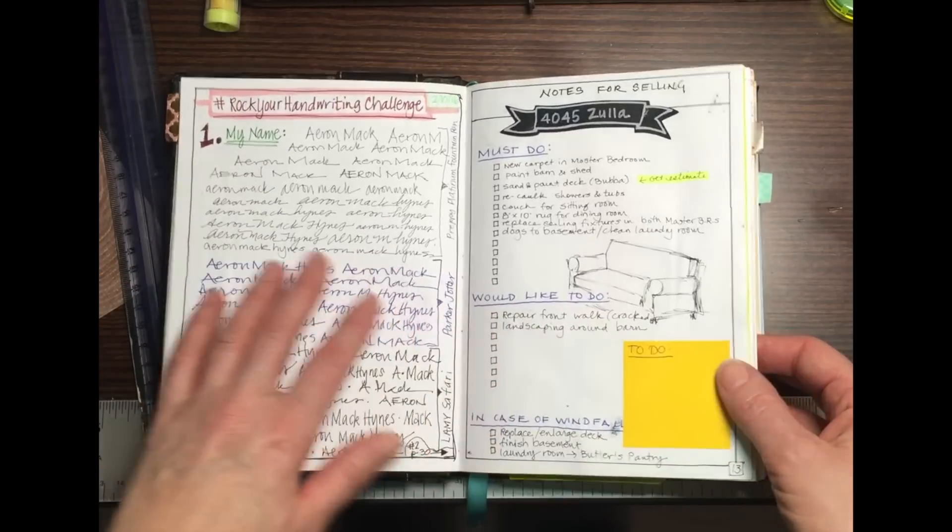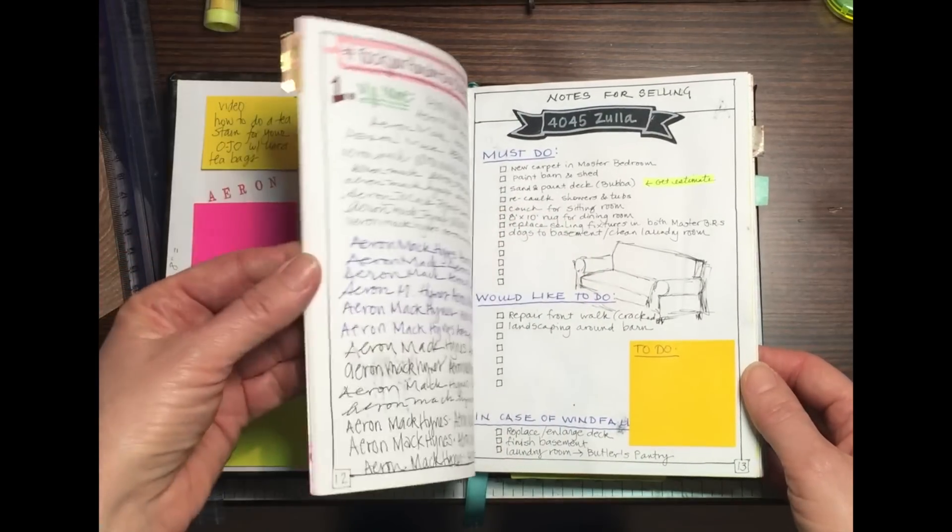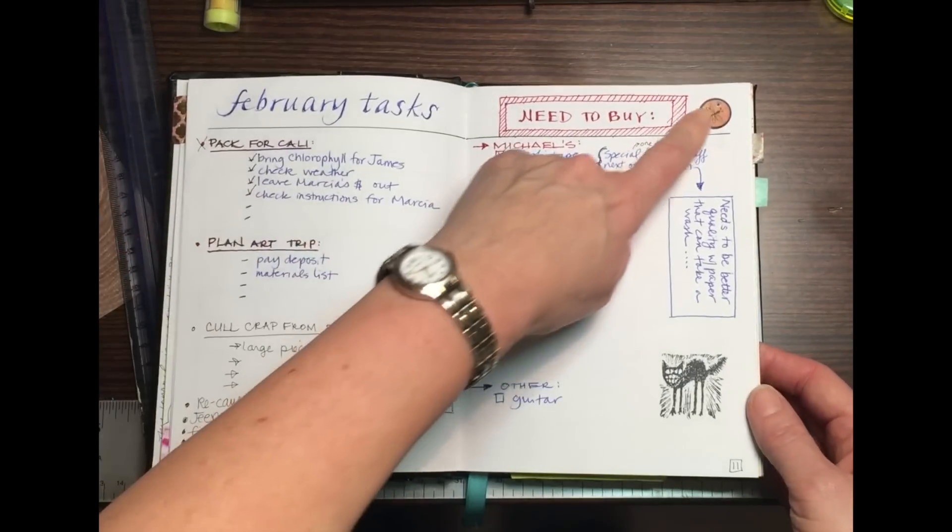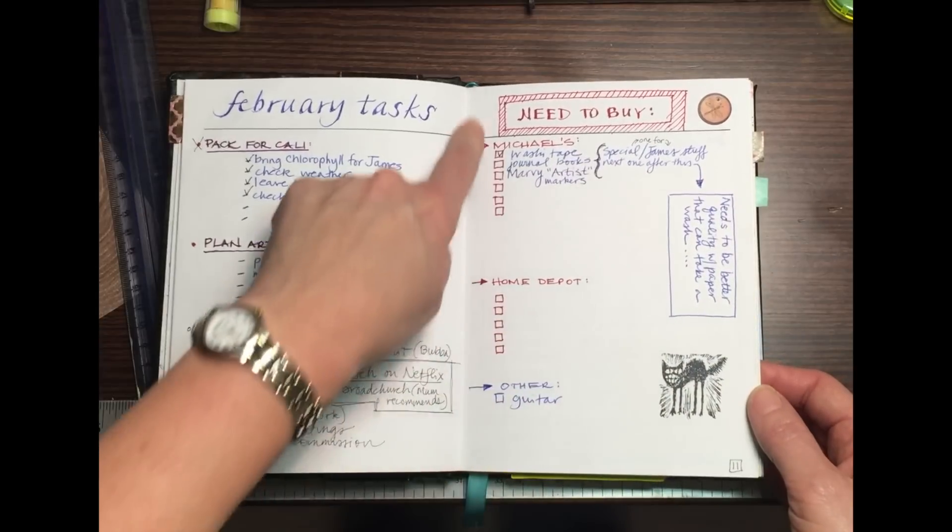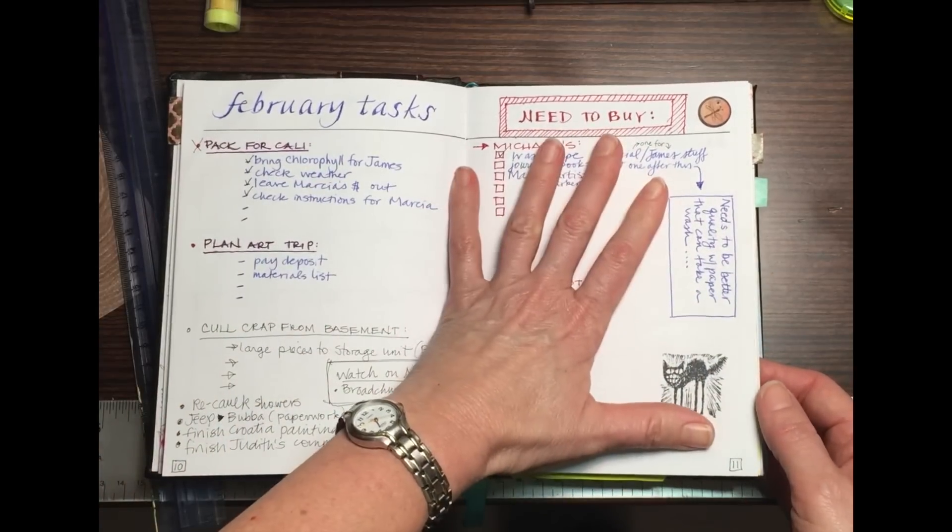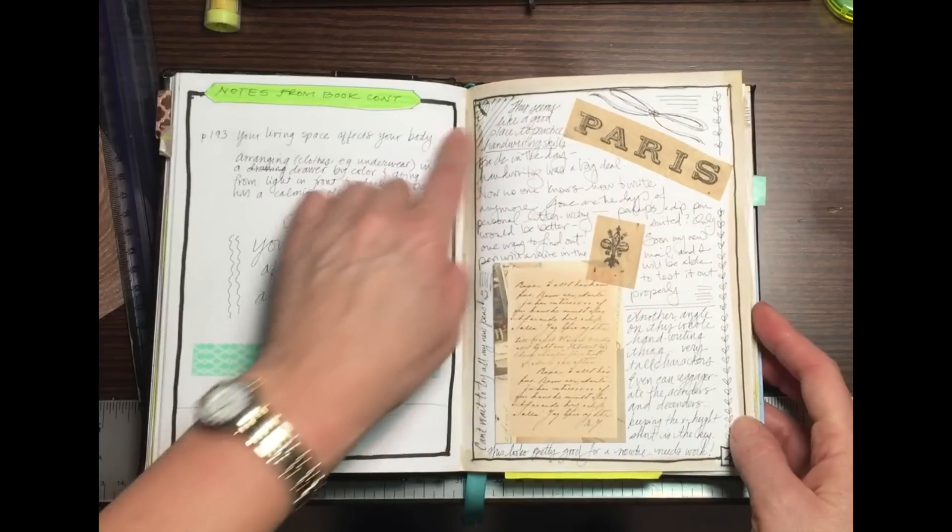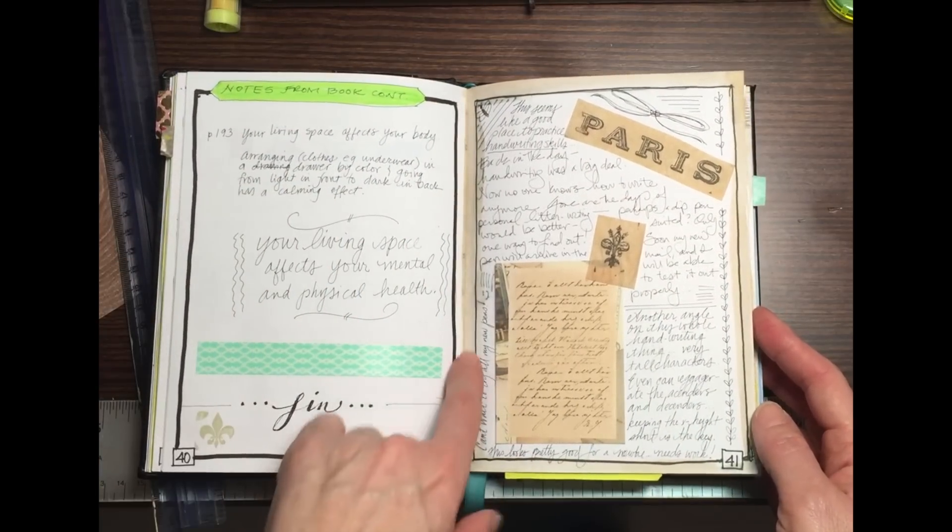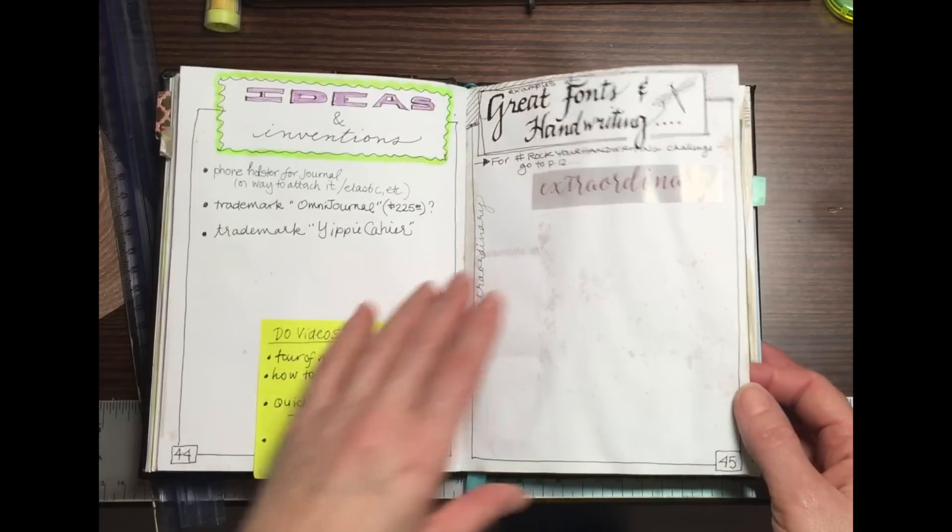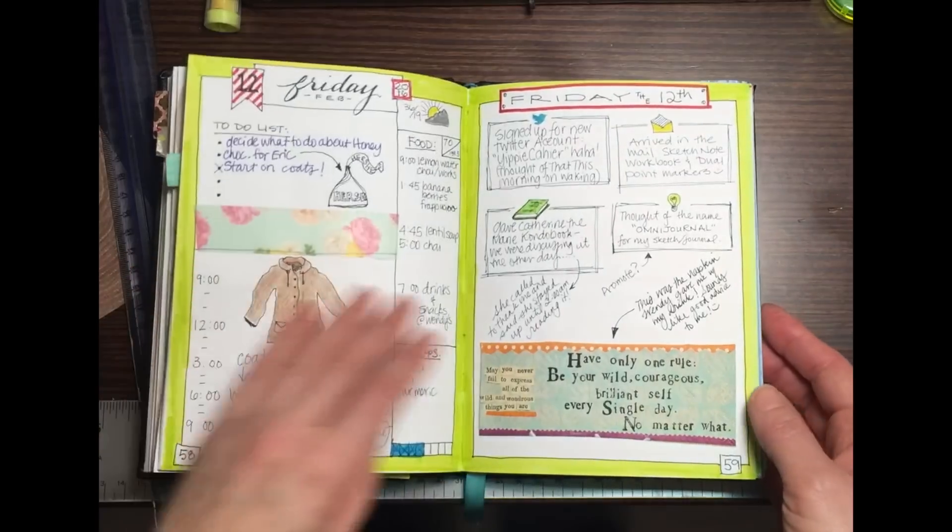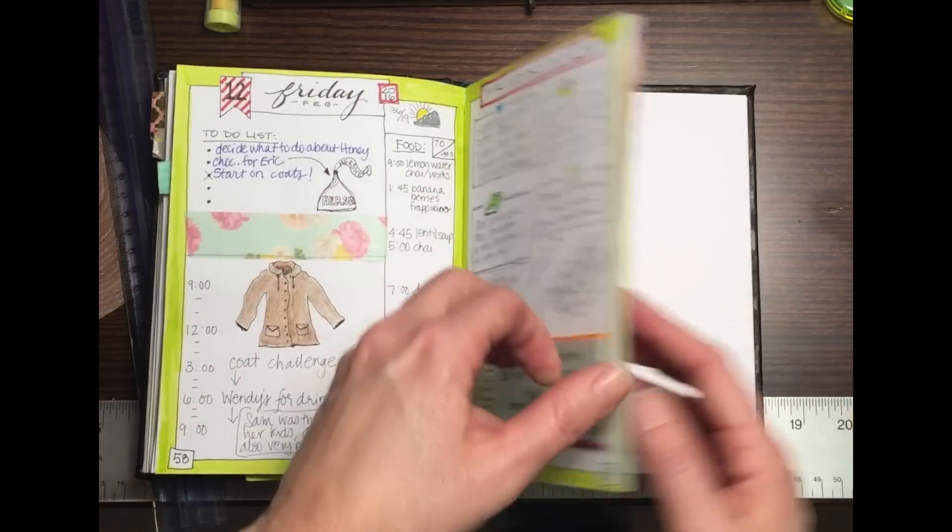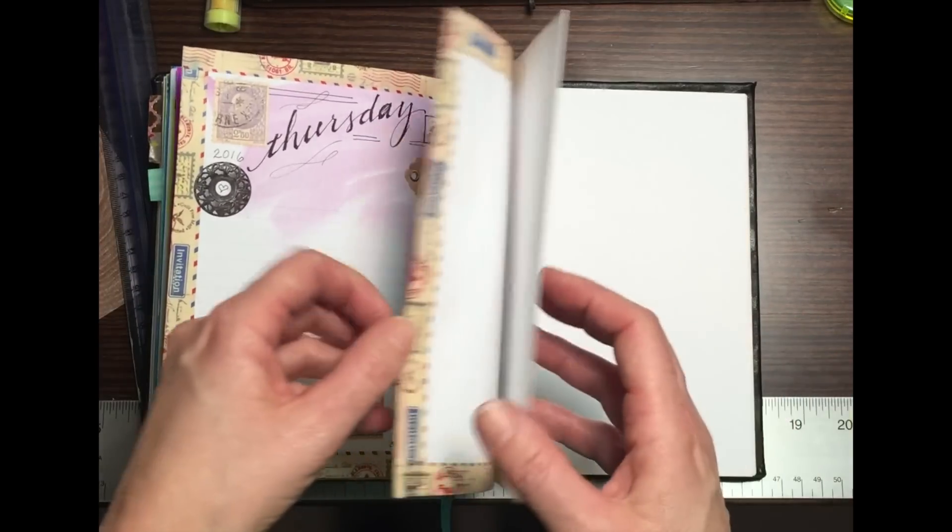You can see here the pages without a bounding box just don't look as neat and tidy, so I always start off almost all of my pages with a bounding box like this. And I'm going to show you how you can do those as well without a ruler, if you so desire.